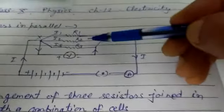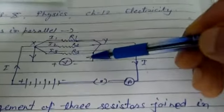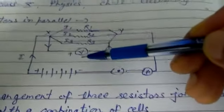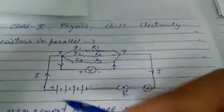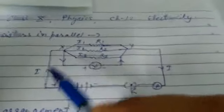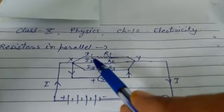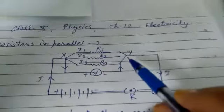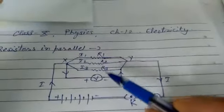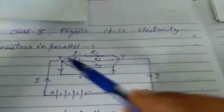We have three resistors R1, R2, R3. The total current I is equal to I1 plus I2 plus I3. So this is a master formula of resistors in parallel combination.